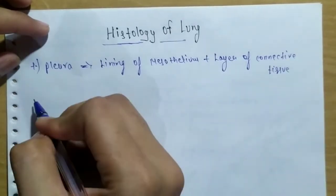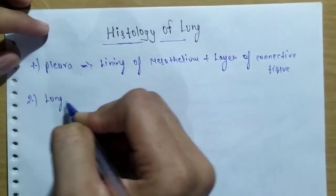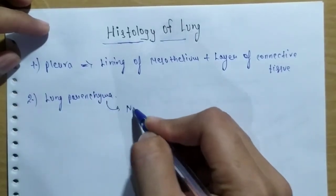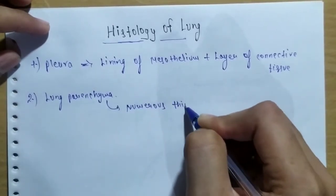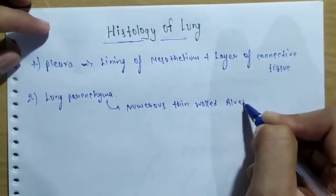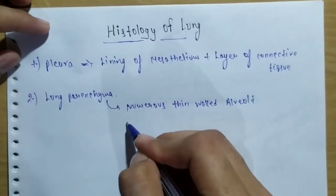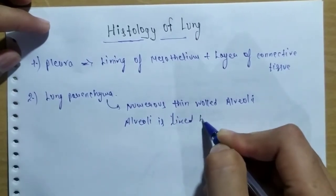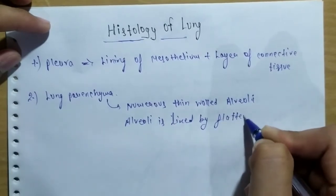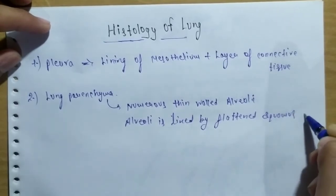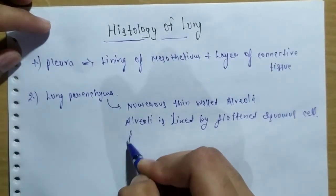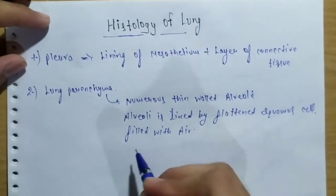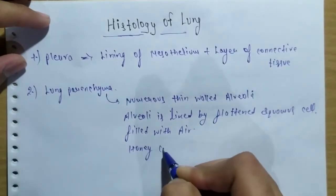After this, we discuss lung parenchyma. It consists of numerous thin-walled alveoli. Alveoli are lined by flattened squamous cells. Alveoli are filled with air, and lung parenchyma gives an appearance like a honeycomb.